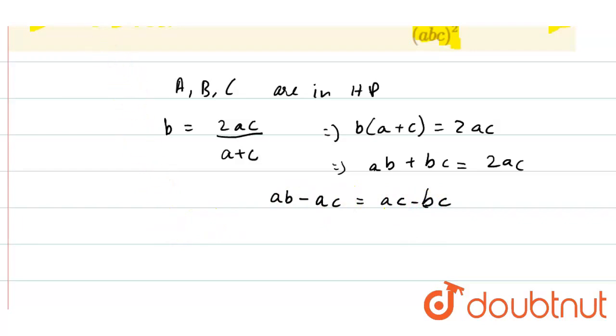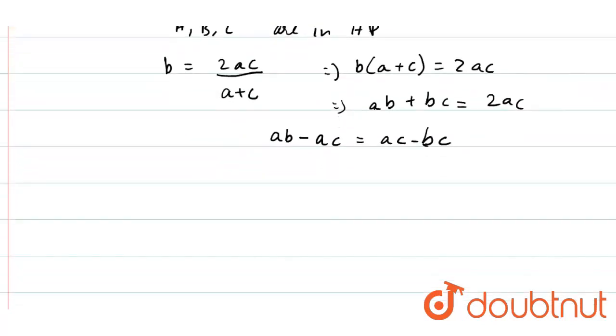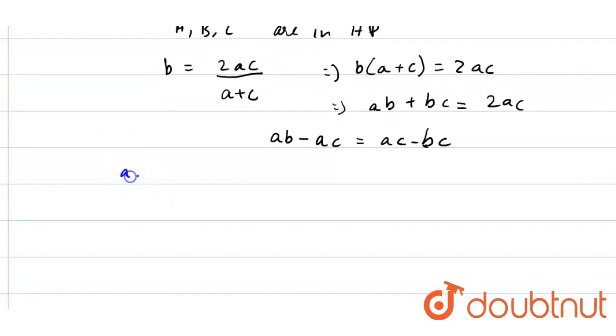So now we have to find the value of this equation here. So now (AC + AB - BC) into (AB + BC - AC). AB plus AB minus AC.